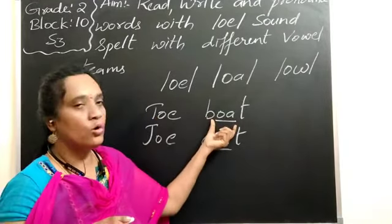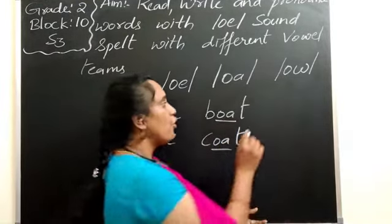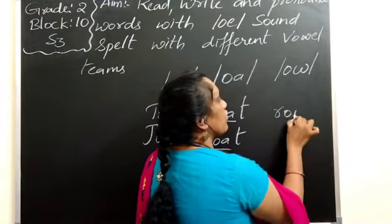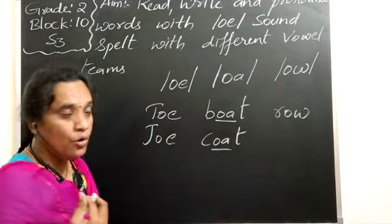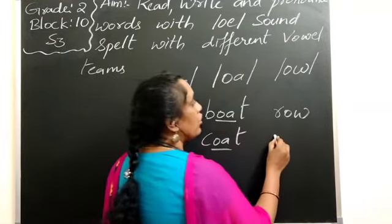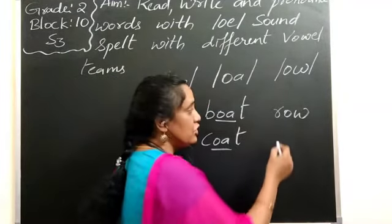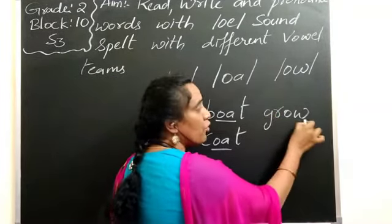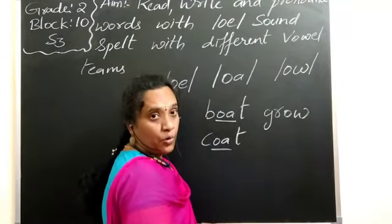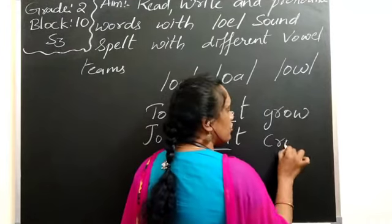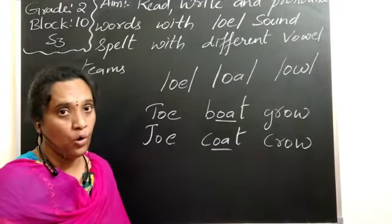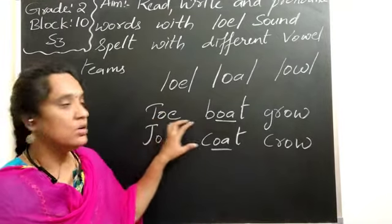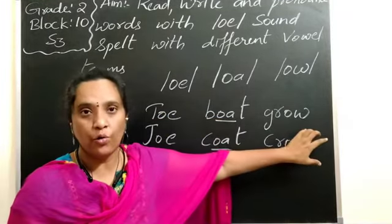With O-W: 'row' gives the O sound. And if we add G, it becomes 'grow,' also giving the O sound. So here we are not pronouncing the W, but O-W is giving a sound of O. Joe, boat, grow — these all demonstrate the O sound.